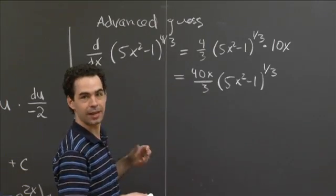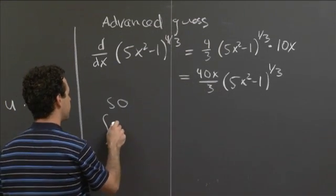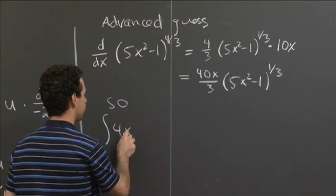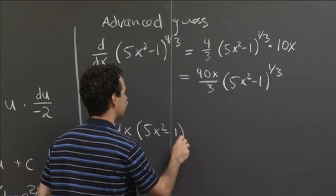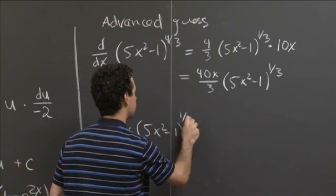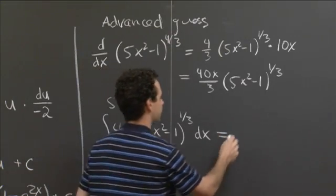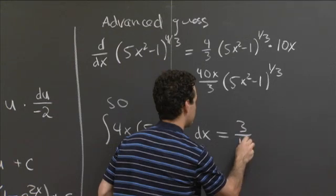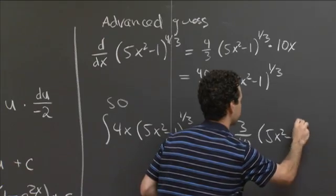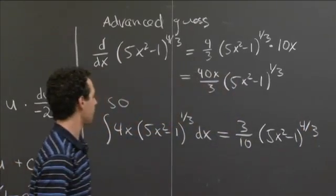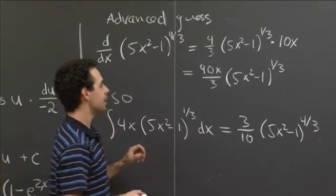So I need to correct by multiplying through by 3 tenths. So we get that the anti-derivative, that we want the anti-derivative of 4x times the quantity 5x squared minus 1 to the 1 third dx is equal to, well, it's equal to 3 tenths of this 5x squared minus 1 to the 4 thirds. OK. So that's our second anti-derivative, which we got by advanced guessing.